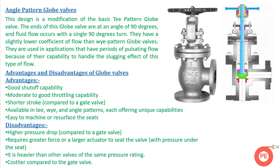Moving on to angle pattern globe valves — as the name suggests, the valve inlet and outlet are at an angle. Flow enters from one side and exits at 90 degrees. This design is basically a modification of the T-pattern globe valve where the ends of the globe are at 90 degrees, with one being the inlet and the other the outlet.